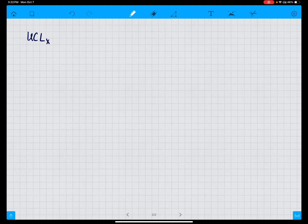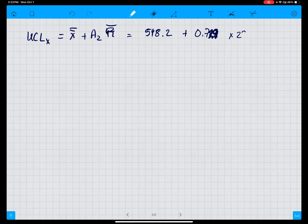Upper control limit of X is equal to X-bar-bar plus A2 times R-bar. X-bar-bar is equal to 598.2 plus A2, which we take from the table of coefficients for X-bar and R charts. We look for N equals 4, we get 0.729 times 22.4.